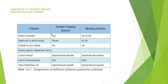Speed of operation: in the transfer tripping scheme it is fast, whereas in the blocking scheme it is not as fast, because the relay has to wait for a predefined time of 100 to 200 milliseconds. If the blocking signal is not coming, it has to wait for the complete time before it can issue a trip.